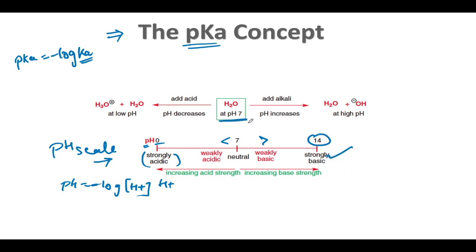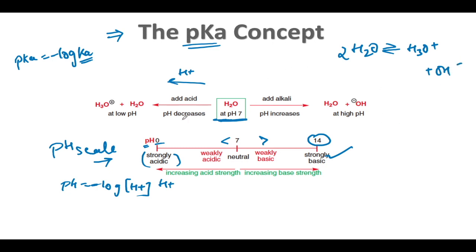How does water exist at different pH values? Water at pH 7 exists in the neutral form. The self-ionization of water gives H₃O⁺ plus OH⁻. At pH less than 7, the hydronium ion H₃O⁺ is the predominant species. When pH is greater than 7, the hydroxide ion OH⁻ predominates.